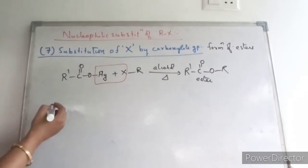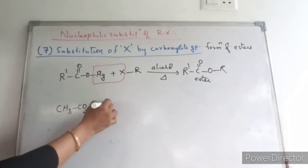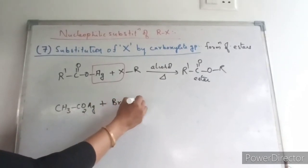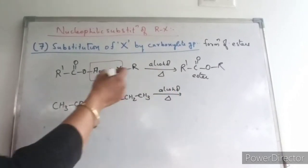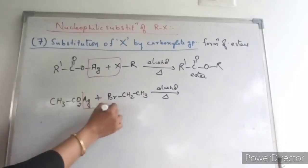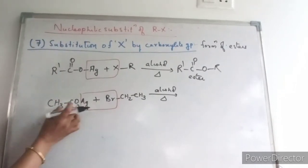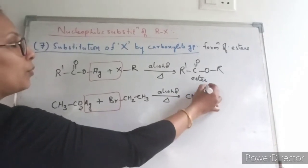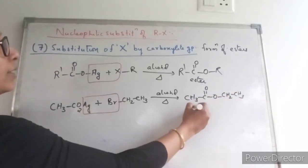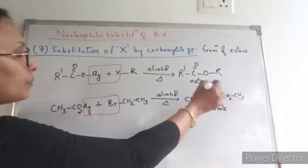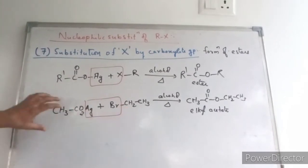For example, I am taking silver acetate. If you are treating silver acetate with ethyl bromide and heating in presence of alcohol, silver bromide will be eliminated and you will be getting ethyl acetate. The acetate group is CH3-C=O, and the ethyl group is attached to it. So this is called ethyl acetate. We are preparing ethyl acetate by treatment of alkyl halide with silver acetate.